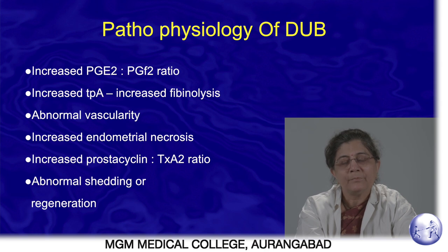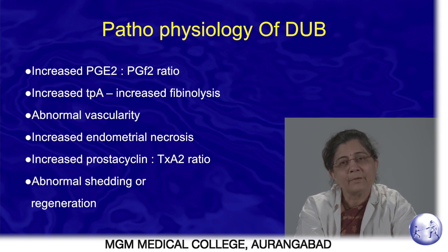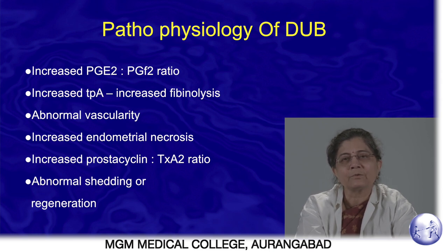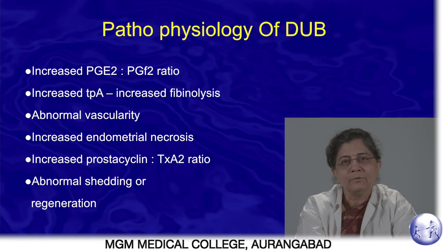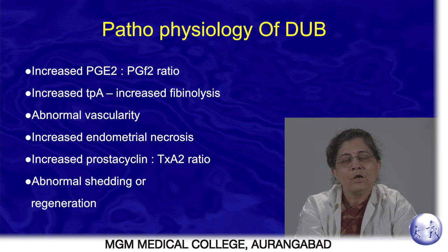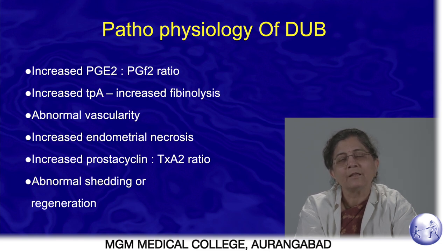The pathophysiology of DUB usually involves a problem in the endometrium — either primary or secondary to ovarian action. Normally there is a balance between vasoconstrictors and vasodilators; if this balance is deranged, excessive bleeding or altered bleeding pattern occurs. There can also be excessive fibrin degeneration, excessive endometrial thickness causing large-area necrosis, or faults in regeneration or shedding — any of these imbalances can result in various symptoms of menstrual irregularity.